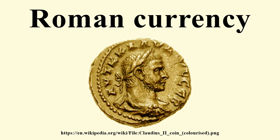The philosopher Epictetus jokingly wrote: 'Whose image does this sestertius carry? Trajan's? Give it to me. Nero's? Throw it away. It is unacceptable. It is rotten.' Although the writer did not seriously expect people to get rid of their coins, this quotation demonstrates that the Romans attached a moral value to the images on their coins.